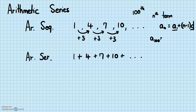The 100th term would equal the first term, which is 1, plus n, which is 100, minus 1, which is 99, times the common difference, which is 3. So we have 1 plus 297, which equals 298. So the 100th term of this arithmetic sequence would be 298.